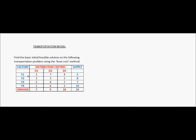Each of the factories can transport material to any of the distribution centers, and the unit cost of transporting from each factory to each distribution center has been given, represented in black. For example, shipping one unit from F1 to D1 costs 2 rupees, and from F1 to D2 costs 7 rupees. We are asked to find the basic initial feasible solution to meet all supply and demand constraints.